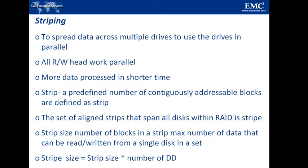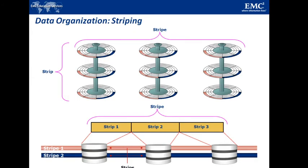Stripe width refers to the number of data strips in a stripe. Striped RAID does not provide any data protection unless parity or mirroring is used, which will be studied in the upcoming slides.